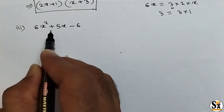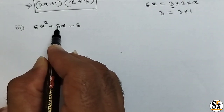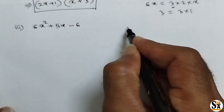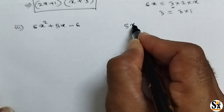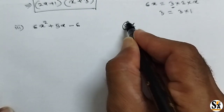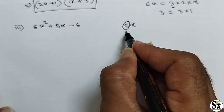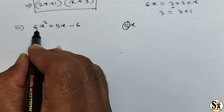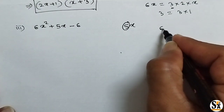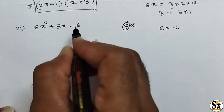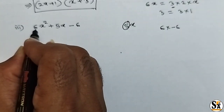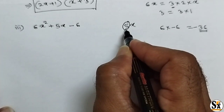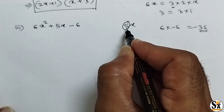Now see the next sub-question. The polynomial is 6x squared plus 5x minus 6. Here also we will use the middle term split method. The middle term is 5x, so consider the coefficient 5. We need factors of 5 such that addition equals 5 and multiplication equals 6 into minus 6, which is minus 36.